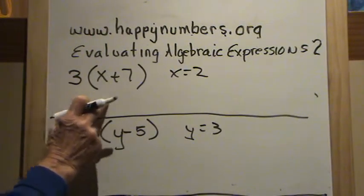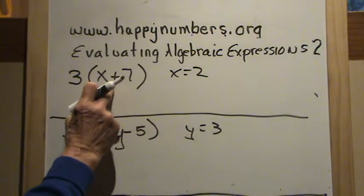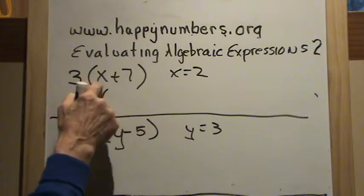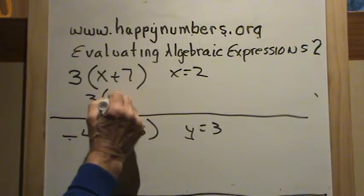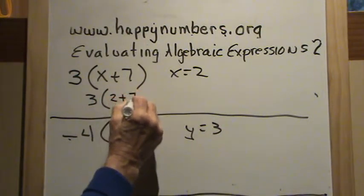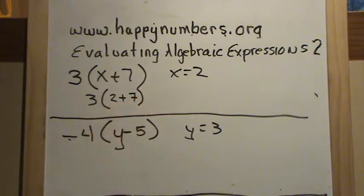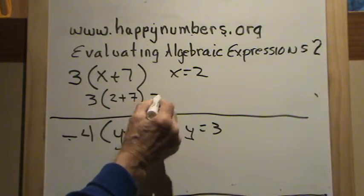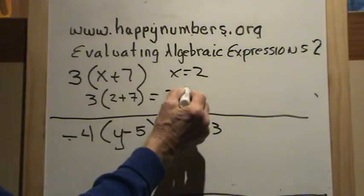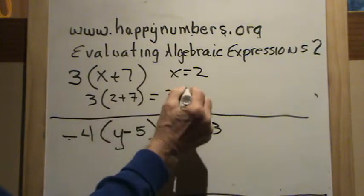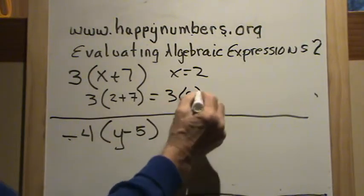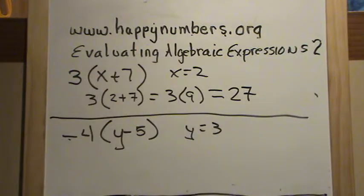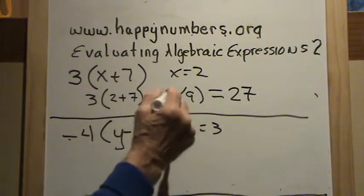First thing we have to do is substitute: 3 times the quantity of x, x is 2, so 2 plus 7. Then we do inside the parentheses — 2 plus 7 is 9 — then 3 times 9 is 27. Simple.